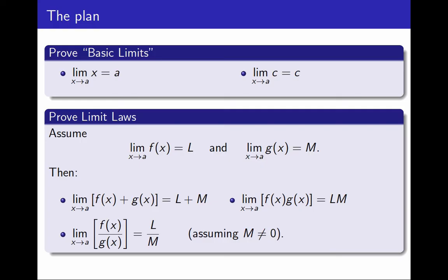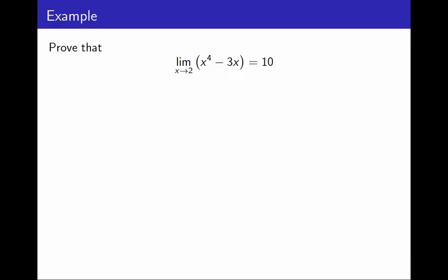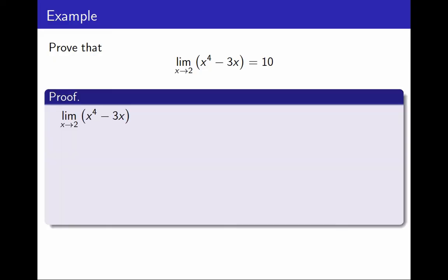How will this help me? How can I go from just this to concluding that the value of the limit of any polynomial is just the same as plugging it in rigorously? Well, let's look at an example. Let's say I want to calculate the limit as x approaches 2 of x to the 4th minus 3x. This function is the sum of two smaller functions, x to the 4th and minus 3x.